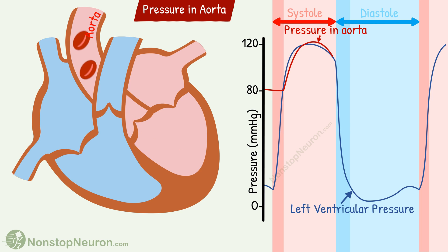Then the blood again starts flowing in the forward direction. The pressure recording during all this looks like this. The backflow of the blood produces a notch in the curve. At this point, the aortic valve closes. And then as blood again moves forward, there is an upward deflection in the pressure curve.